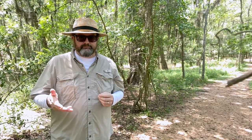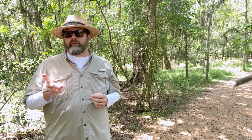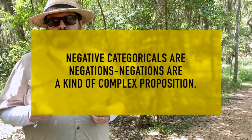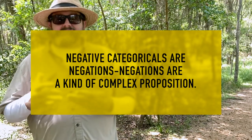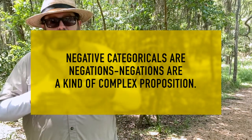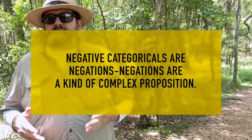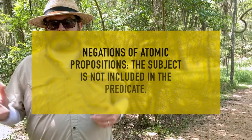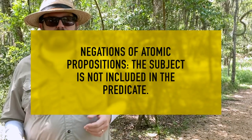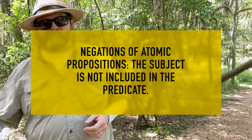Complex propositions are built out of at least one atomic proposition and a logical connective. Negations are complex. A negation is when you claim that the subject is not ascribed by the predicate — it is not included in the predicate, to use the language of categoricals.